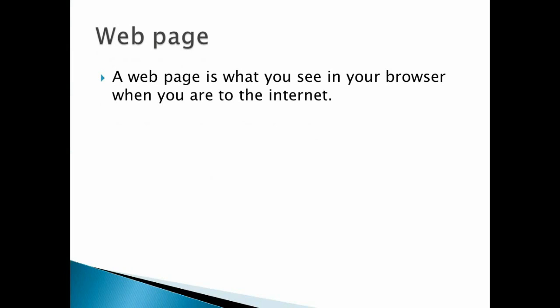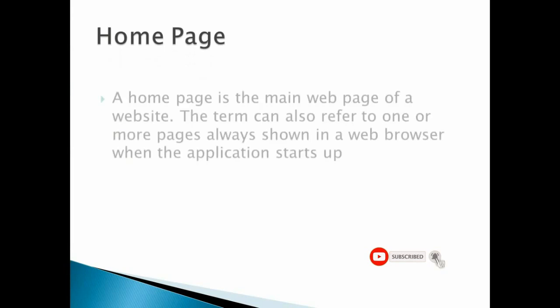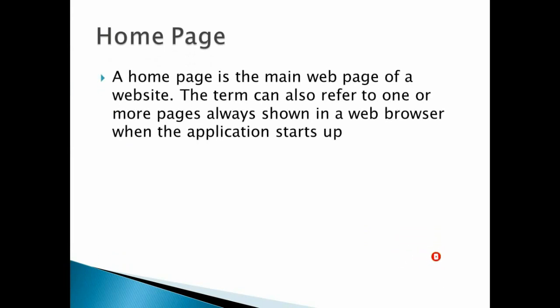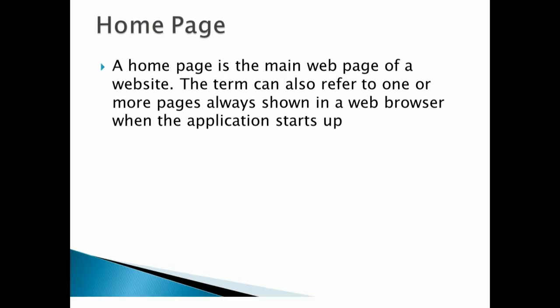A web page is what you see in your browser when using the internet — each particular page is a web page, and web pages are designed using HTML. The home page is the first page of any website. For example, when you type www.wikipedia.com or www.youtube.com, the first page you see is the home page of that website.